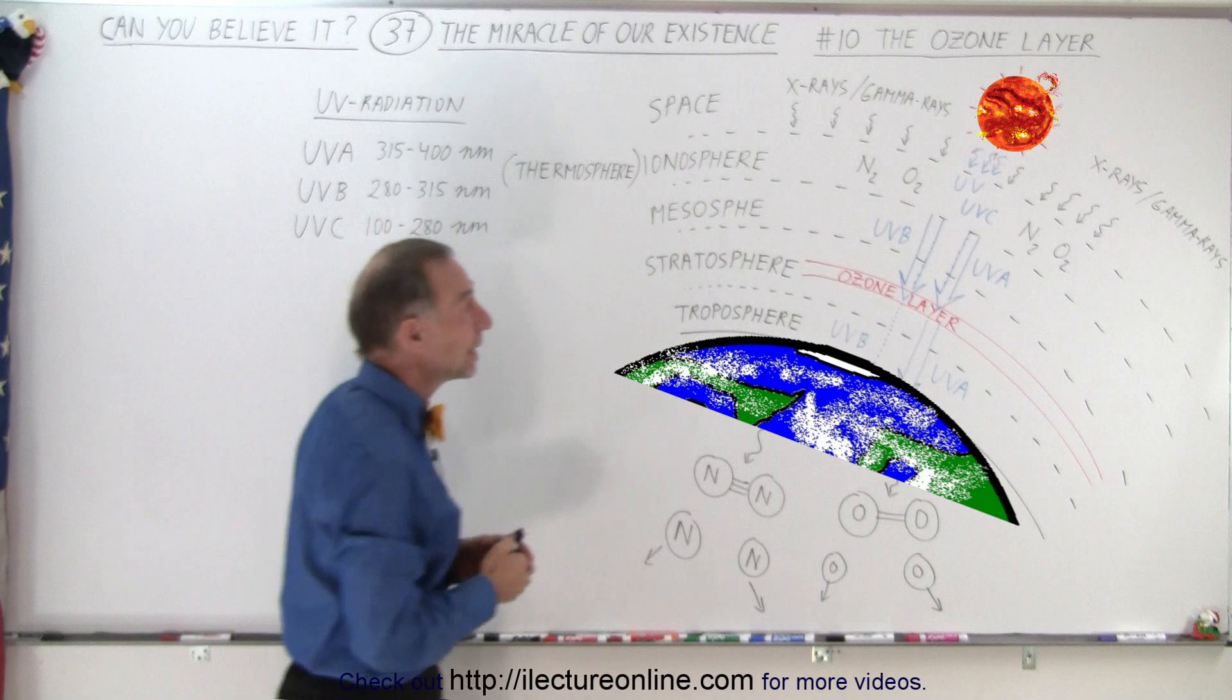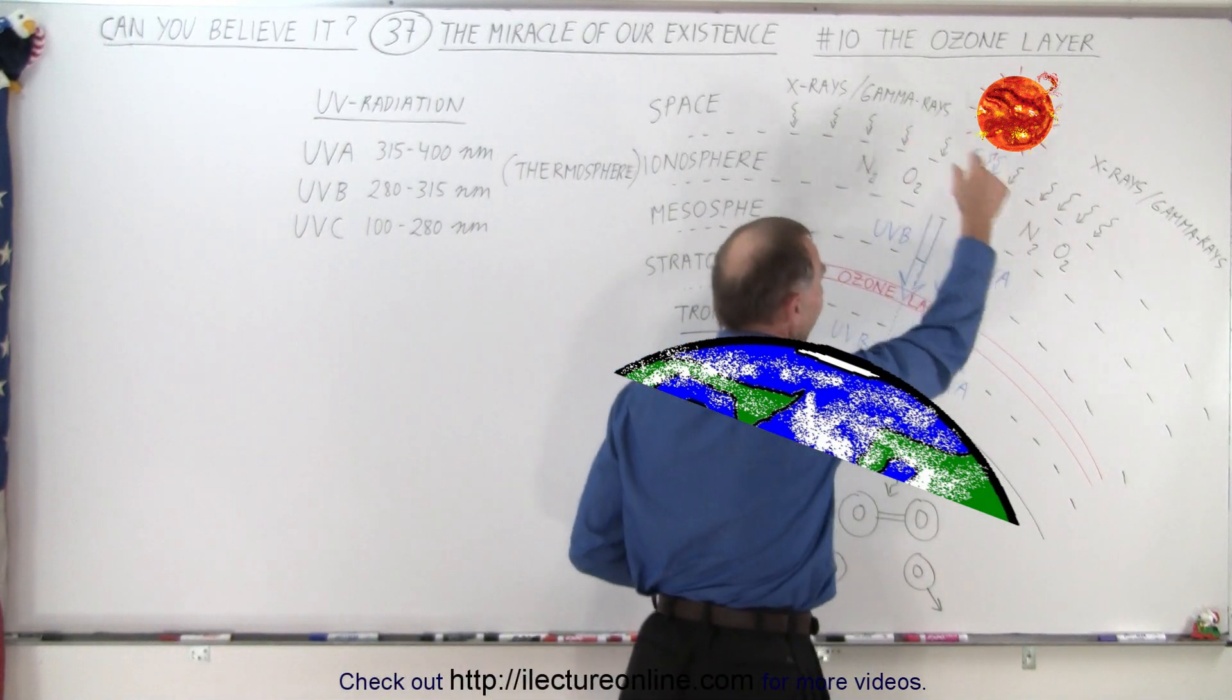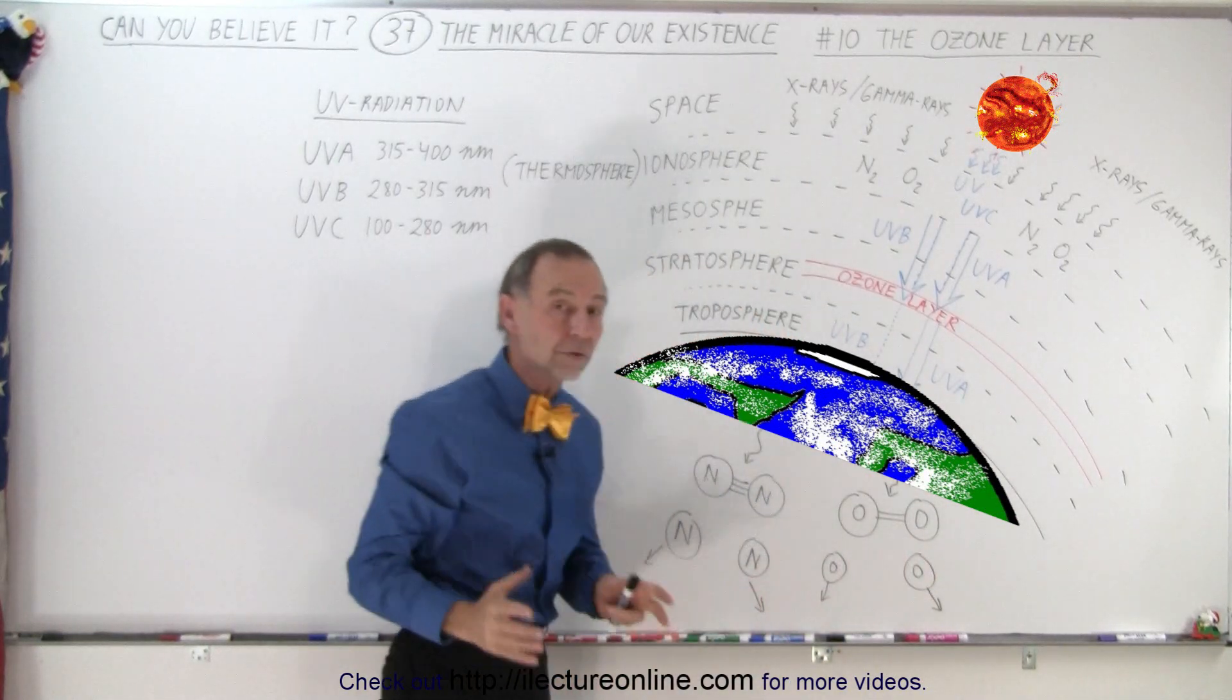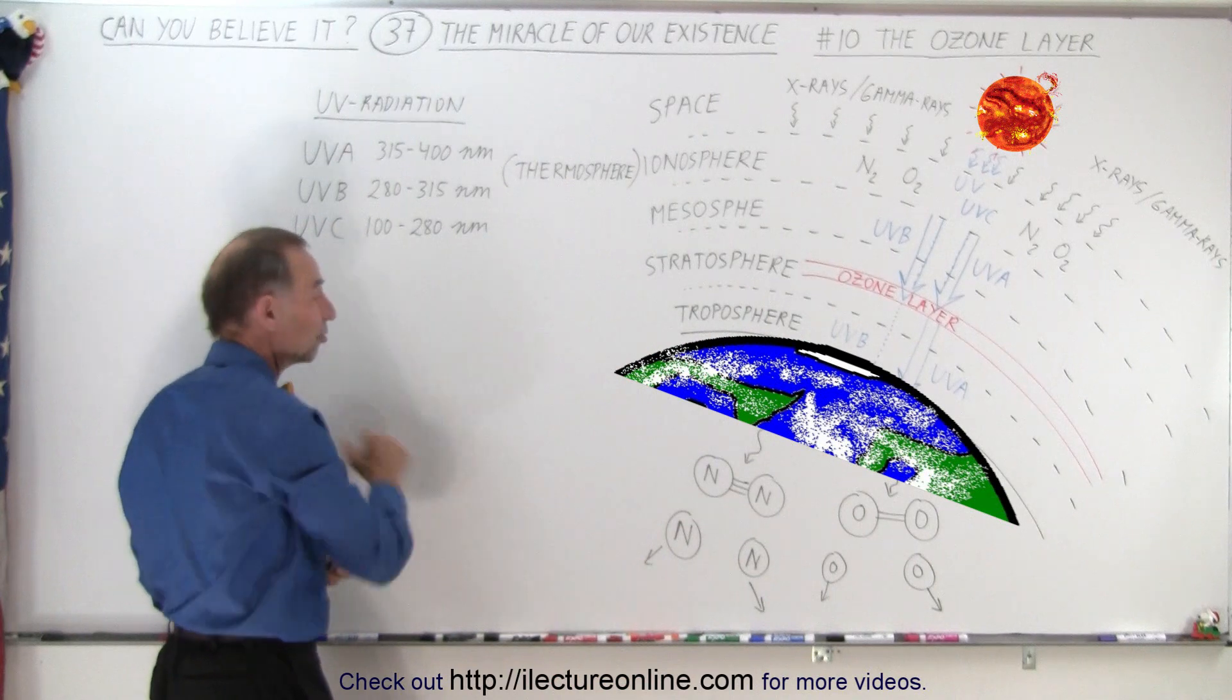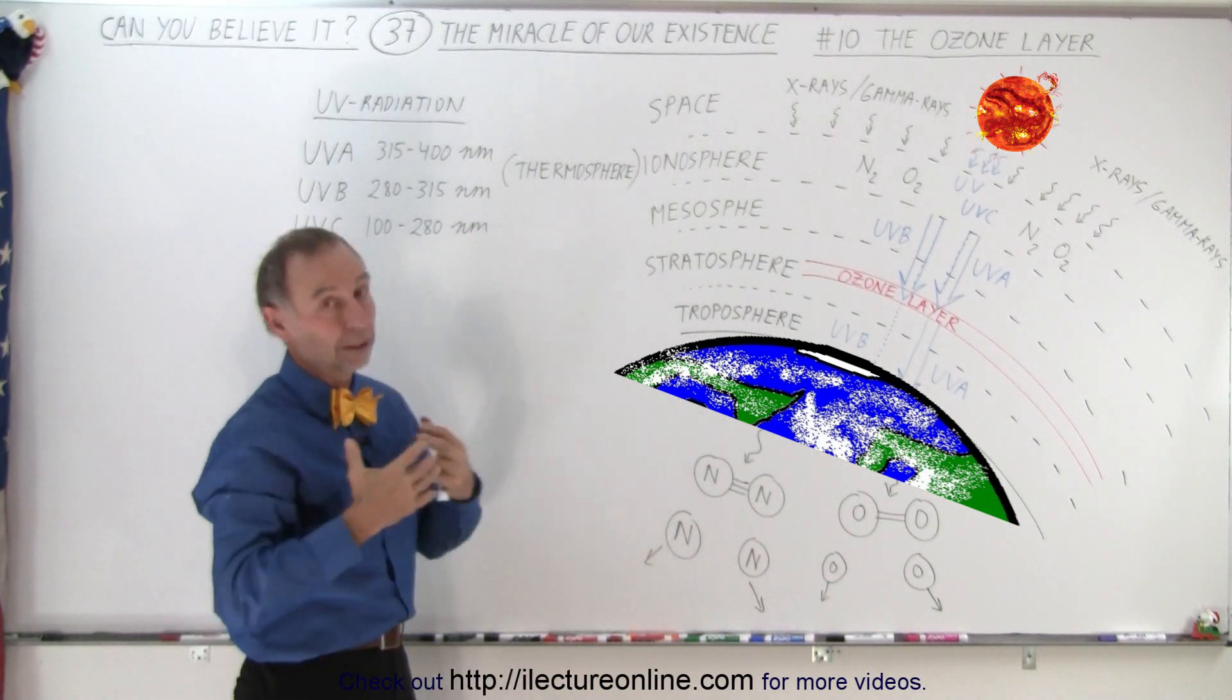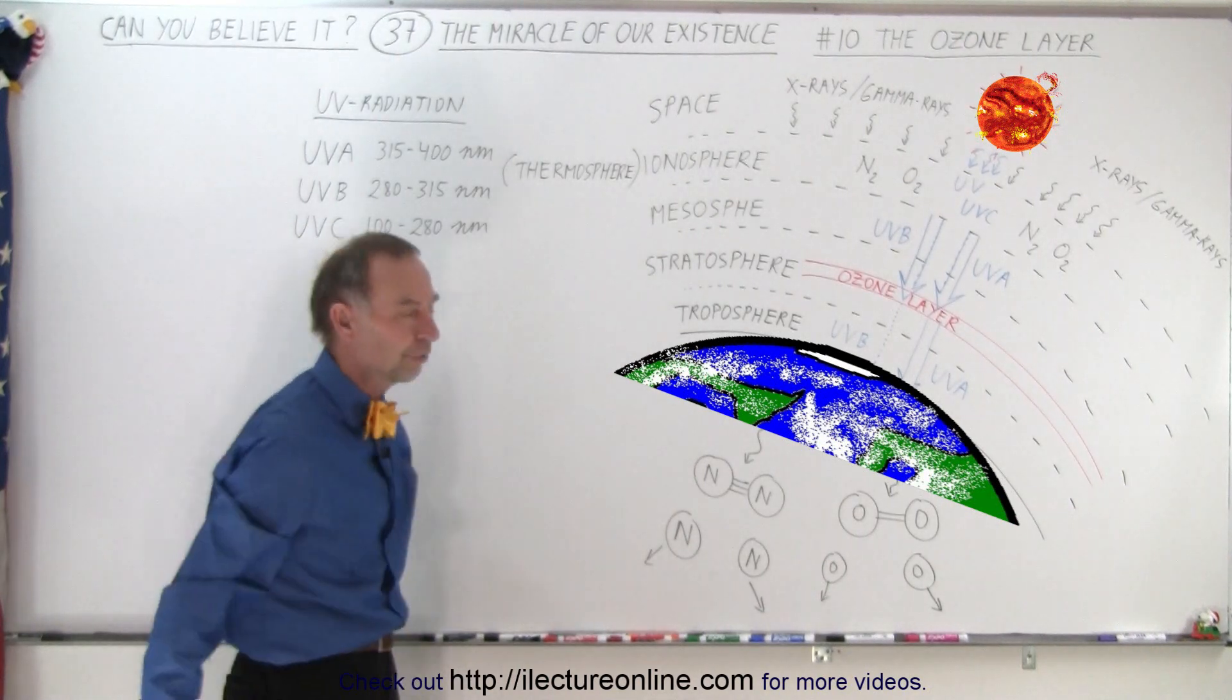But UVC radiation has so much energy that the photons, just like x-rays and gamma rays, will come in, hit the nitrogen and oxygen molecules, and break up those bonds. UVC has enough energy to break the bonds, and that causes that energy to be absorbed. Good for us, we don't have to be exposed to it. It doesn't make it down to the surface.